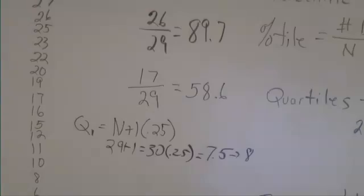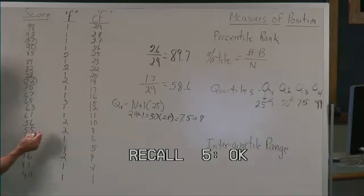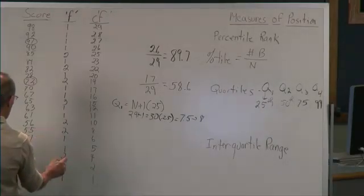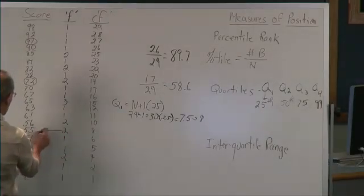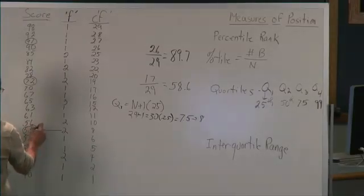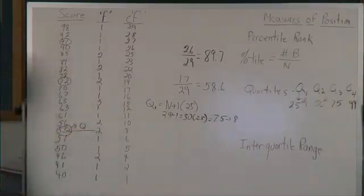Counting up from the bottom — scores 1 through 8 — the 8th score from the bottom is a score of 55. So 55 is the first quartile (Q1).